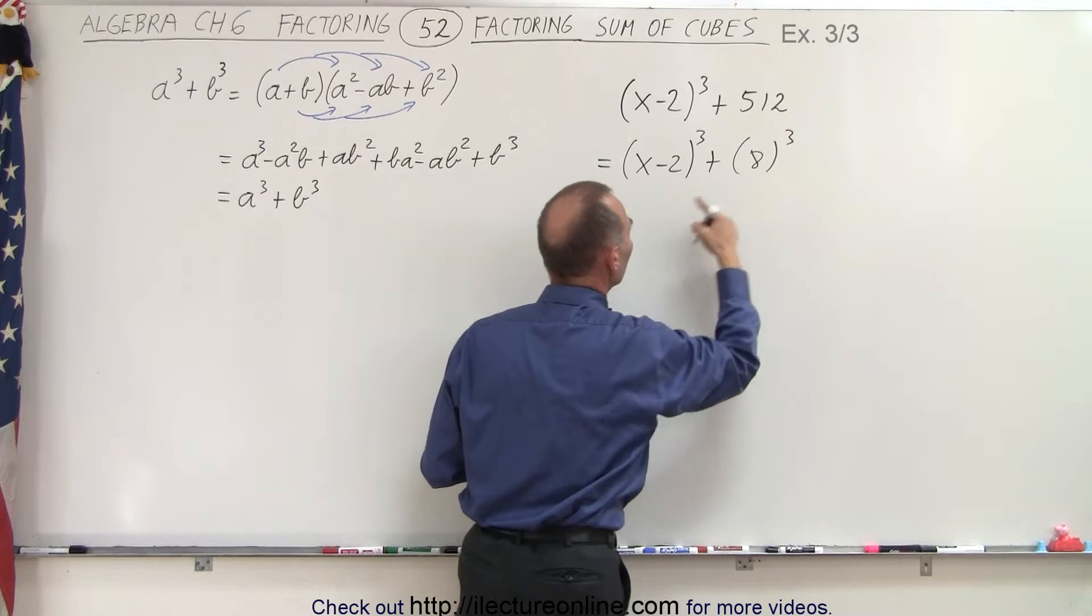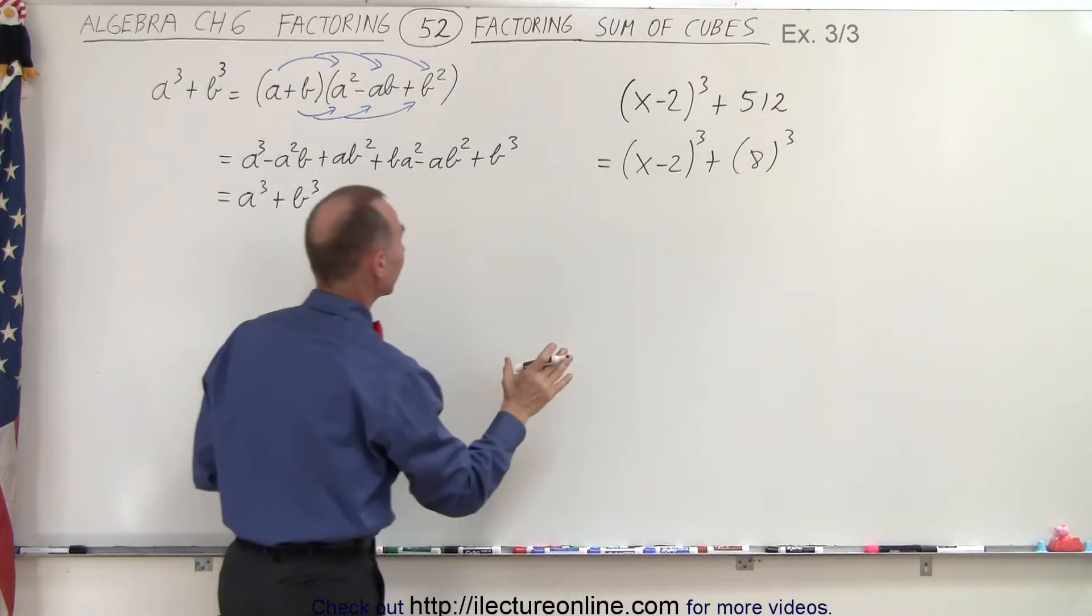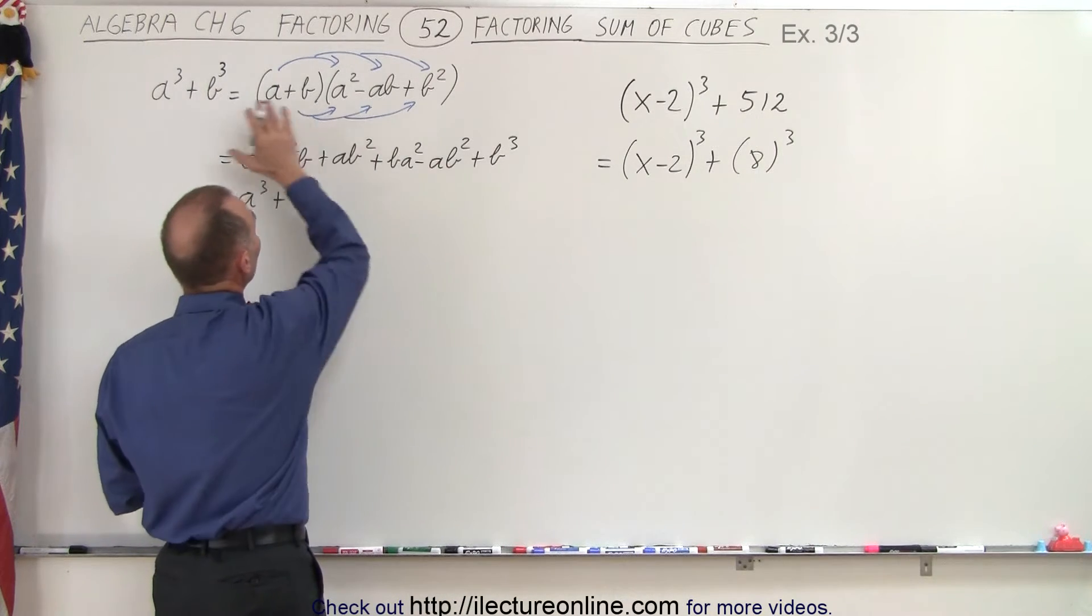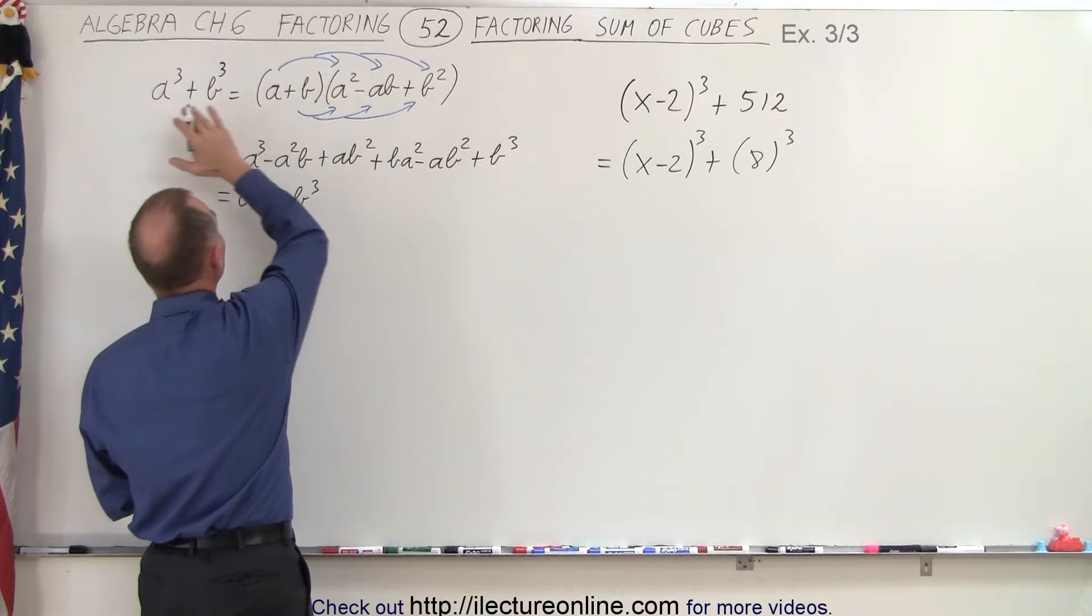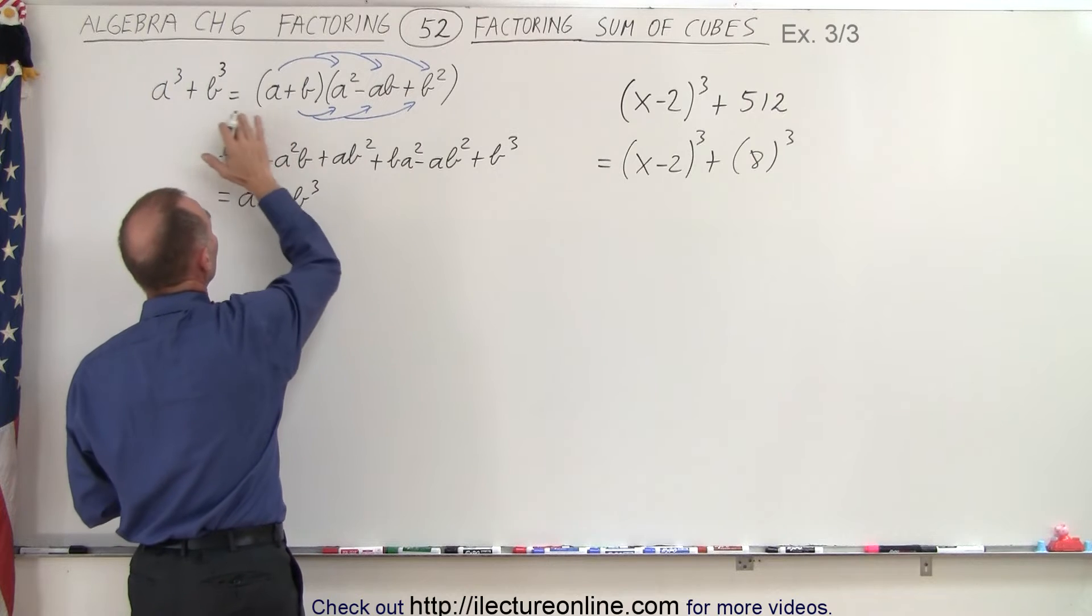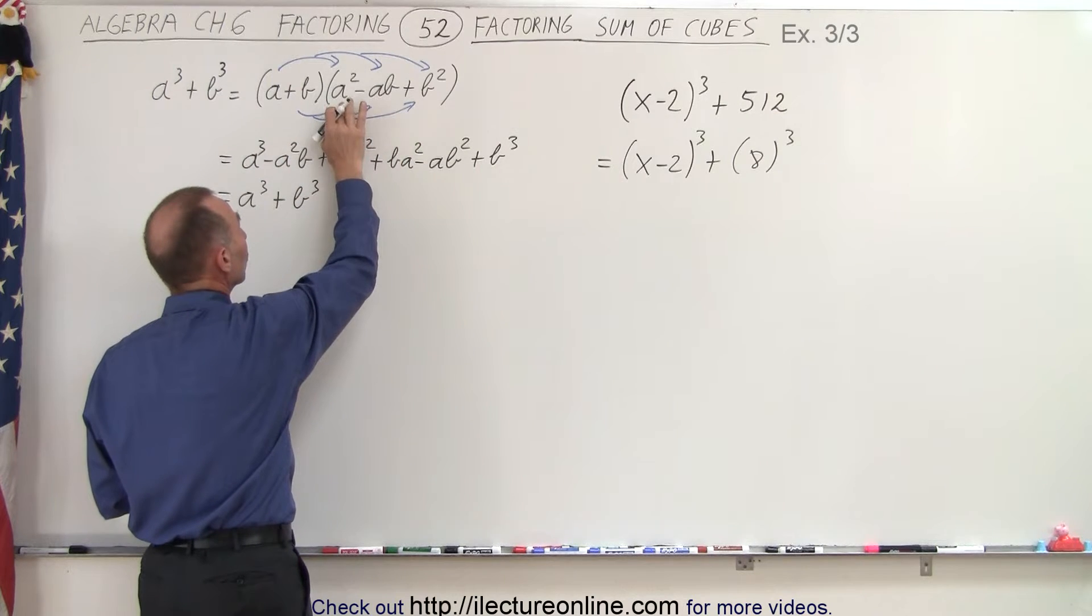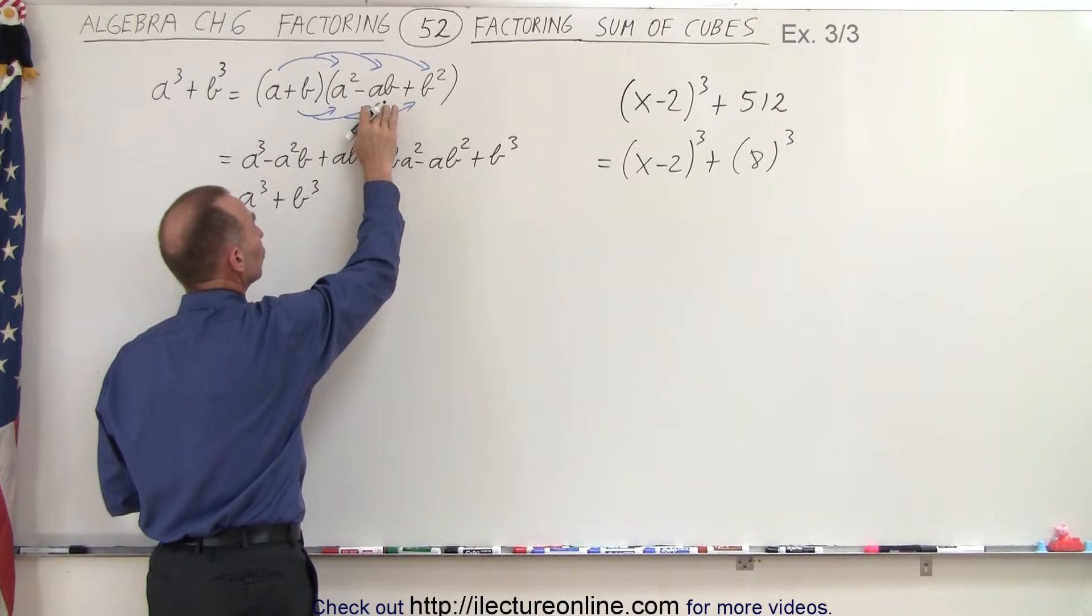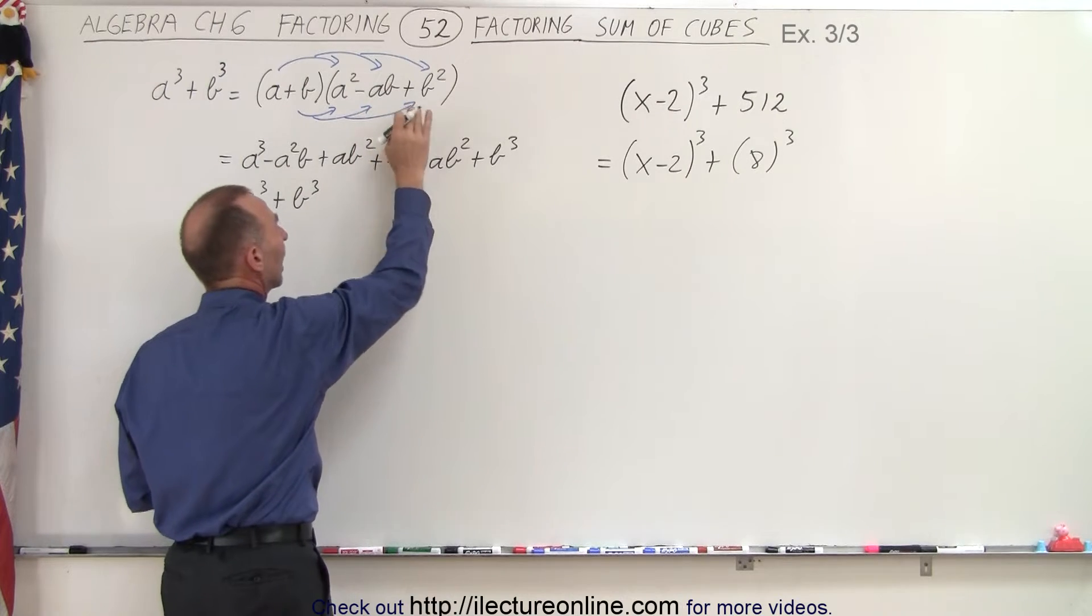And now you realize you're dealing with the sum of cubes. Again, you're going to solve it the way you solve the general form of that. If you have a³ + b³, that means it equals (a+b) times (a² - ab + b²).